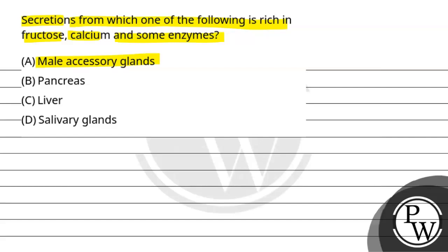First option is male accessory glands, second option is pancreas, third is liver, fourth is salivary glands.